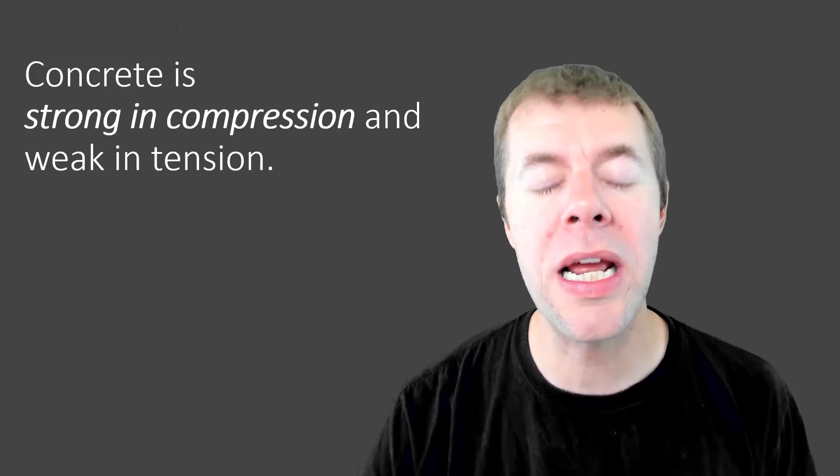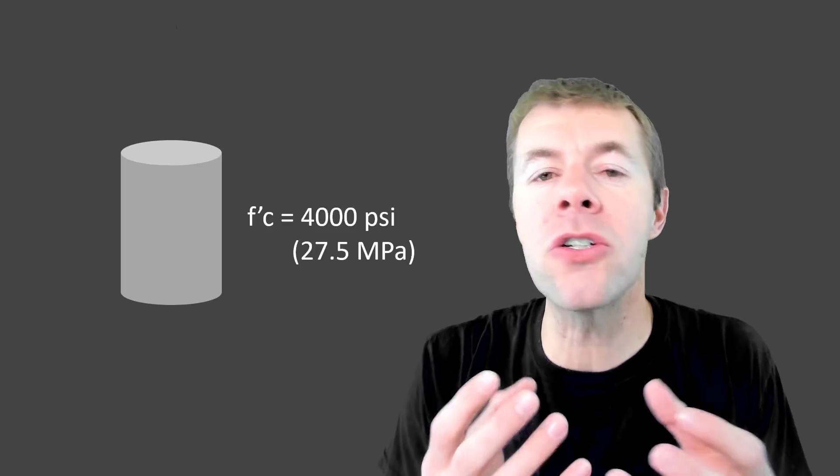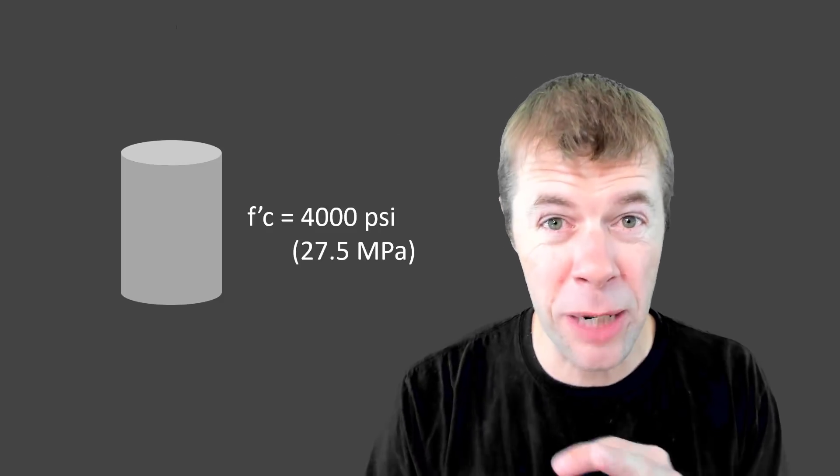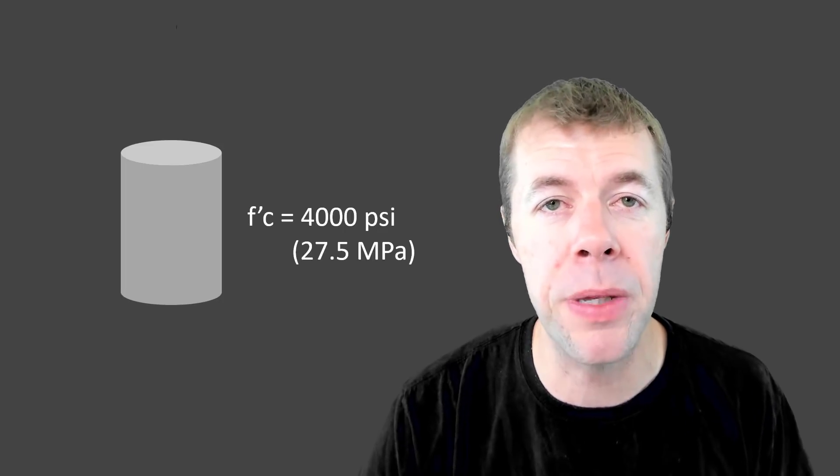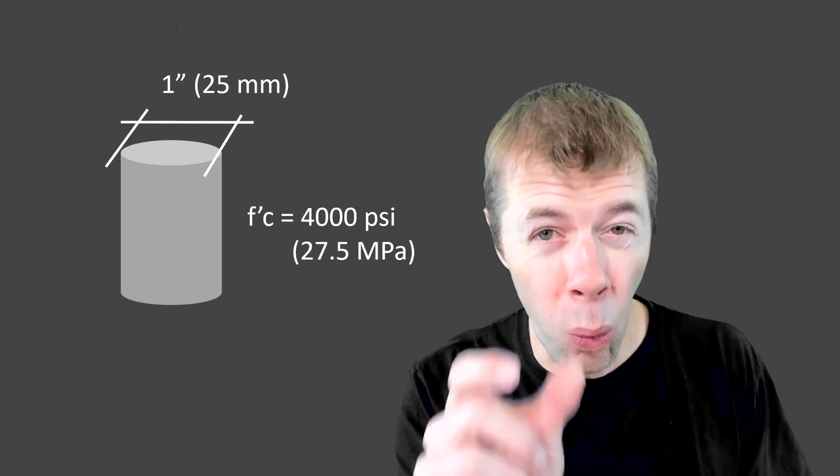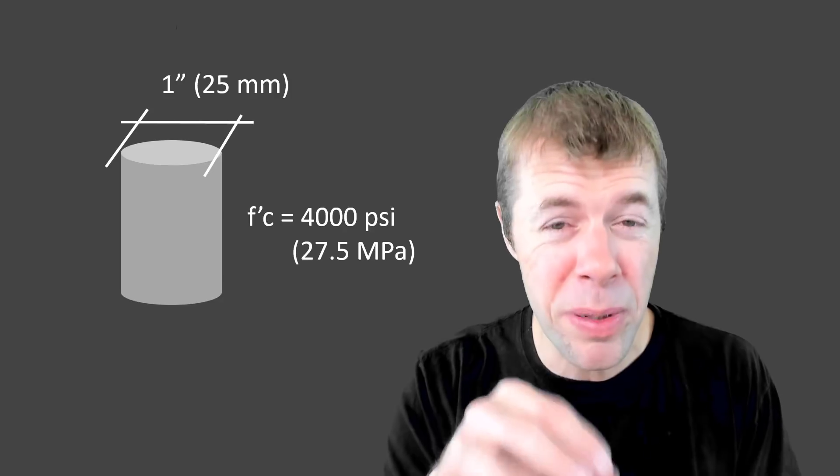I'm going to start out with some normal strength concrete, about 4,000 PSI or 27.5 MPa. That concrete, I'm going to make it one inch in diameter and it's going to be a cylinder.